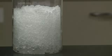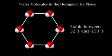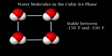In ice, they are tightly packed together and they can't change places. But did you know there are actually multiple solid phases of ice? There is a hexagonal ice phase that is stable until negative 150 degrees Fahrenheit, and a cubic ice phase that is only stable below negative 150 degrees Fahrenheit.